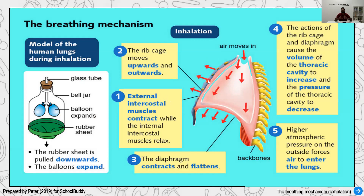The external muscles contract so air can go in. The diaphragm, previously dome-shaped, becomes flattened as it contracts. Because of these changes, the volume increases as air enters. By normal physics, when volume increases the pressure decreases. Due to the difference between higher atmospheric pressure outside and lower pressure inside, air is pushed in.